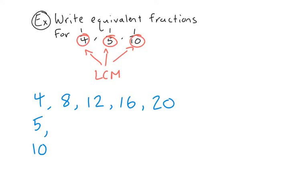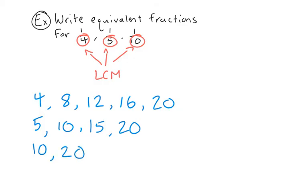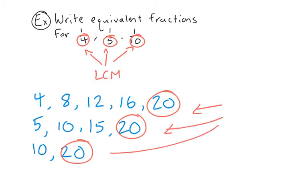Now let's take a look at 5: 10, 15, 20. We can right away see a common number, which is 20. But we're not quite sure if that's common with the multiples of 10, so let's figure that out. 10 plus 10 is 20. We have a common number among all three sets of numbers, and that is 20. So 20 is the lowest common multiple of 4, 5, and 10.